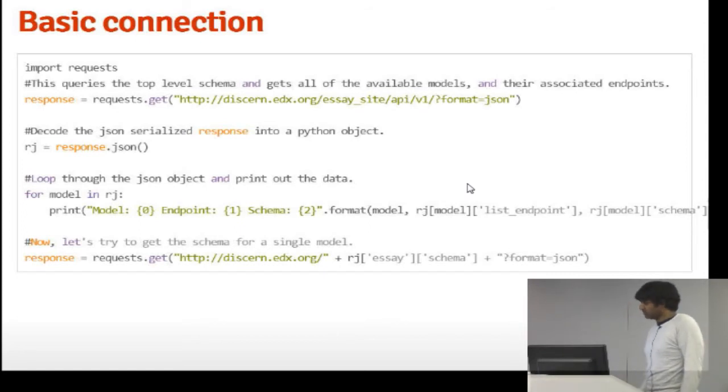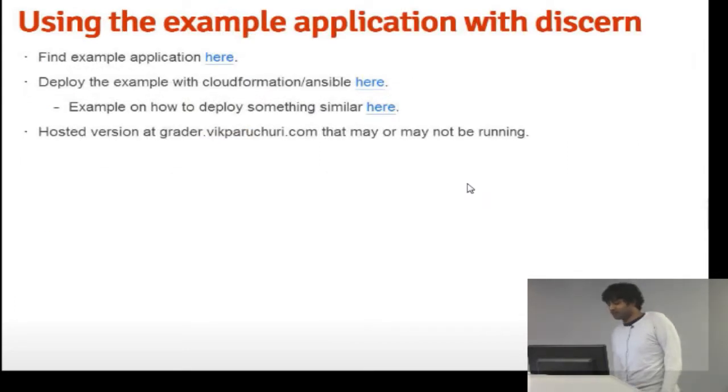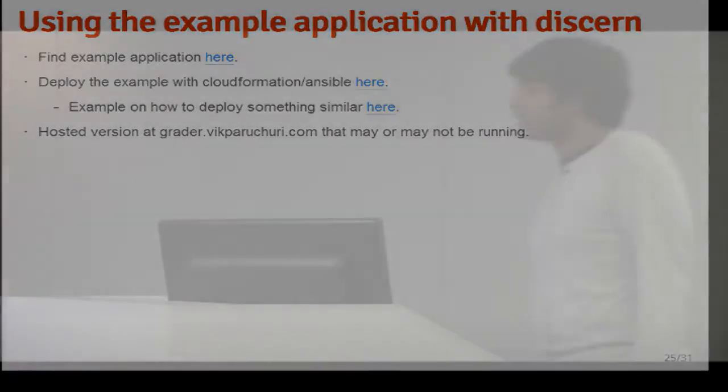So there is an example application that I deployed about an hour before I came here onto an EC2 box. So it may or may not work. But you can go to it at grader.vicparuchuri.com if you want to. This example application interacts with Discern to do basic scoring. So it lets you write essays, it lets instructors grade those essays, and then it automatically scores those essays using Discern's technology. So this is a pretty cool thing to play around with. I'd also like to point out these two. I wrote a quick repo to deploy this. So if you want to put this example application on your own EC2 box, you can easily do that. If you want to put Discern on your own EC2 box and then interact with it on your own, you also can. There's an edX repository called configuration that uses two amazing technologies called CloudFormation and Ansible to make it super easy to deploy.